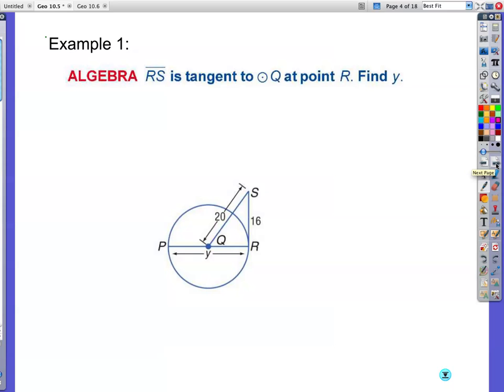That is what that means. So if you know it's tangent, then the radius that comes out and touches the tangent line at the point of tangency is going to be perpendicular to the tangent line. So example one here. Segment RS is tangent to circle Q at point R. Find y. We'll use this rule that we just learned.